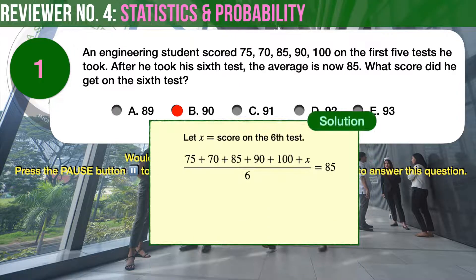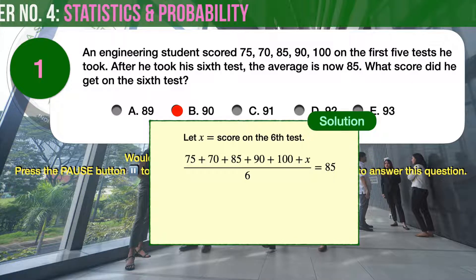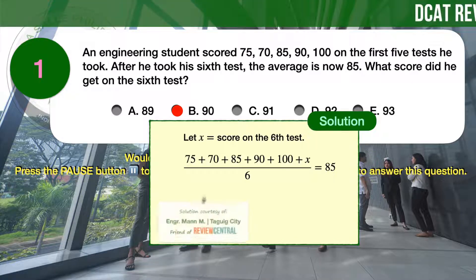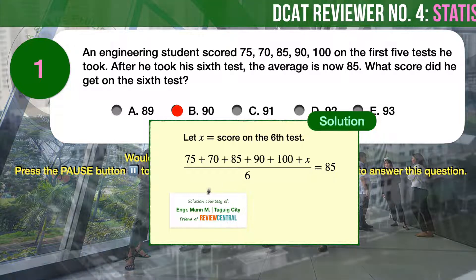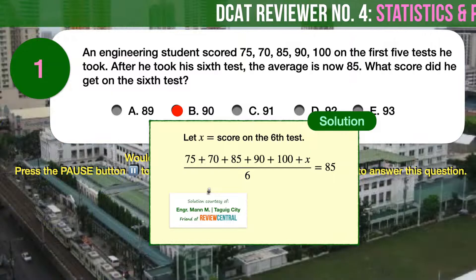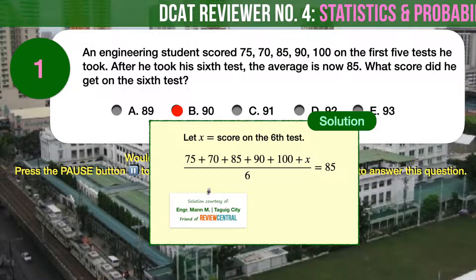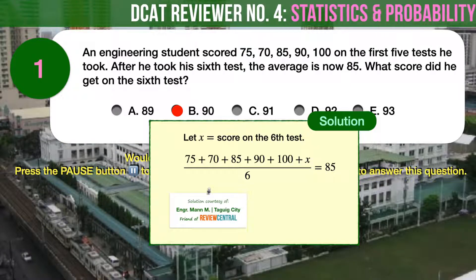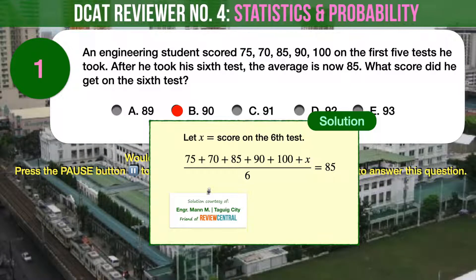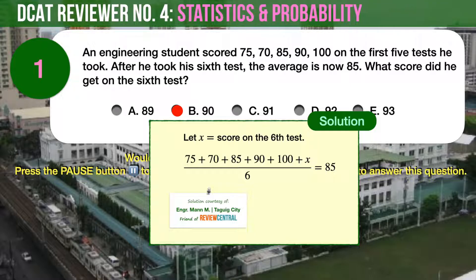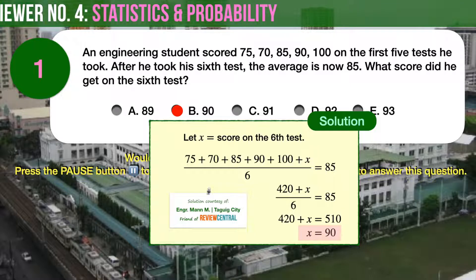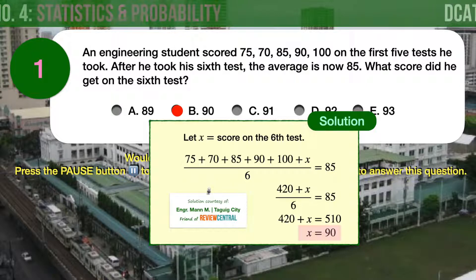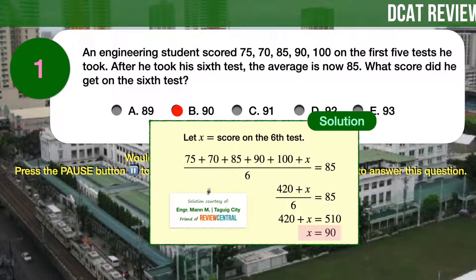Let X be the score on the 6th test. With the scores in the first 5 tests given, we can write the formula for the student's average for his 6 tests as: the quantity (75 + 70 + 85 + 90 + 100 + X) over 6, equals 85. From here we can easily compute for X and arrive at 90 as the correct answer.